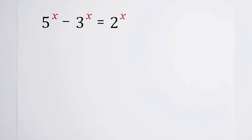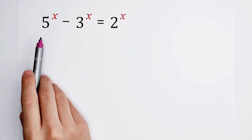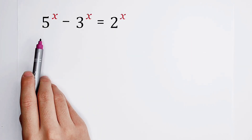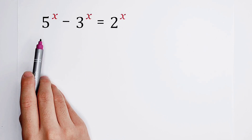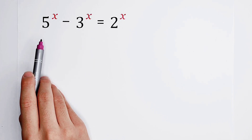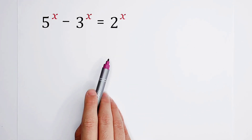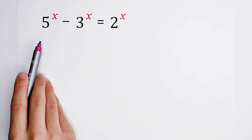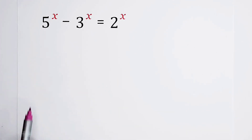What we usually do is to divide both sides by 5 to the power of x. That's what we usually do, and now we're also going to do this — divide both sides by 5 to the power of x.